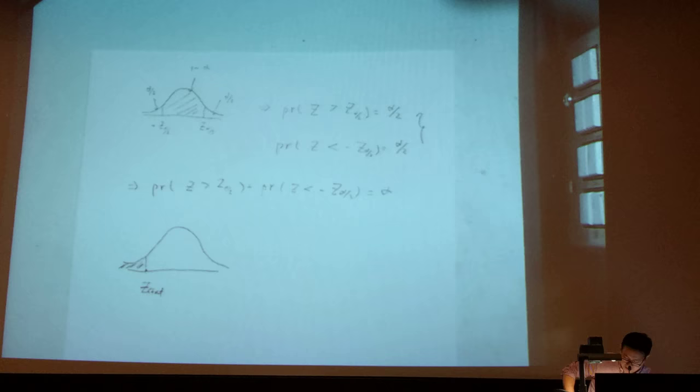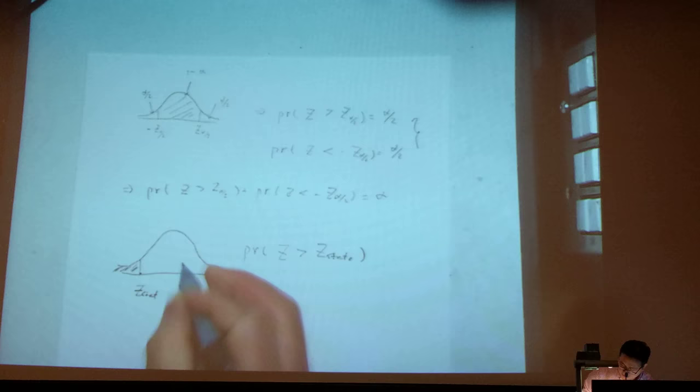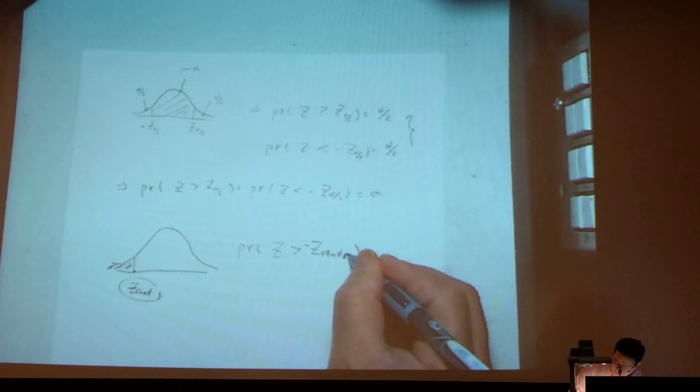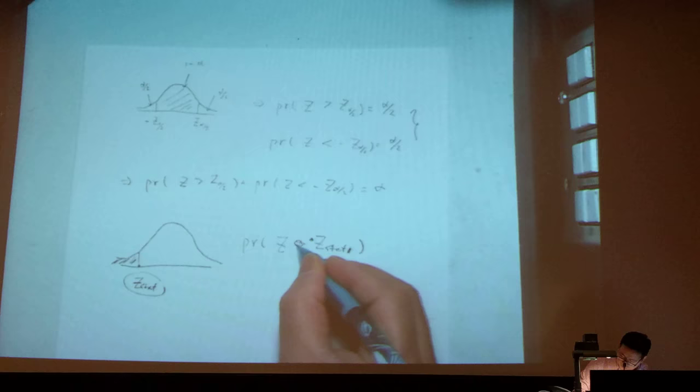So if I ask myself, what is the probability that z is bigger than the z statistic? Actually in this case, because I marked it here on the left side, this one would be smaller. So basically this is here, that would be less than. So it's the probability that z is less than the z statistic, because I marked it on the left side.